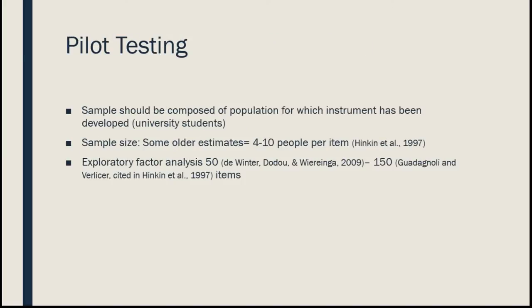Once the scale is developed — items chosen, Likert scale selected, scoring protocol figured out, and directions written — it's time for pilot testing. We want to make sure the sample we choose is composed of the population for which the instrument was developed. In our example, if we're measuring motivation for university student drinking, we'd want university students. There's disagreement about sample size: older estimates say four to ten people per item; newer ideas for exploratory factor analysis suggest anywhere from 50 to 150 people.